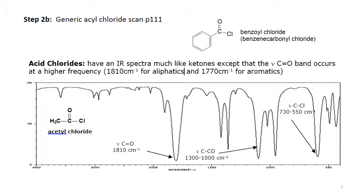Let's look next at an acid chloride. The generic scan shown here is acetyl chloride, which is an aliphatic acid chloride, so it will be a little different from our aromatic acid chloride, benzoyl chloride. Most notable is the carbonyl stretch at 1810 wavenumbers for an aliphatic acid chloride. When conjugated with an aromatic ring or vinyl group, this is lowered — typically to about 1770 wavenumbers for an aromatic acid chloride. The acid chloride also has a C-to-CO stretch in the region of 1000 to 1300, and a C-to-Cl stretch in the region of 730 to 550 wavenumbers.